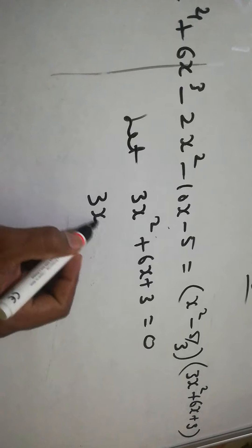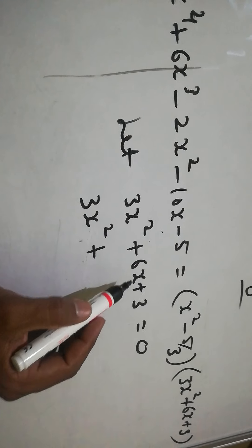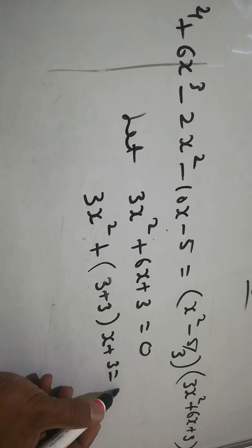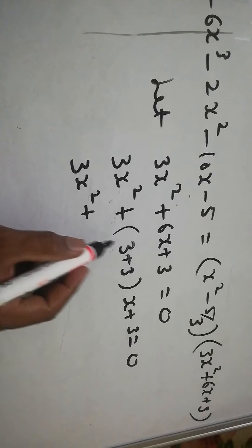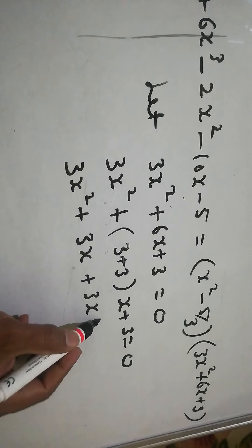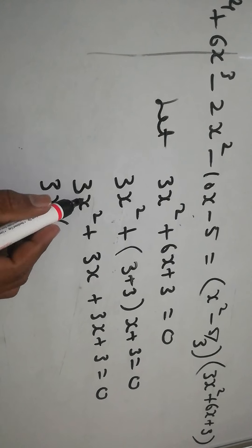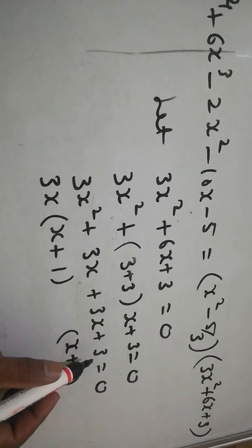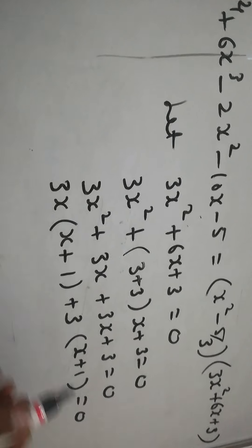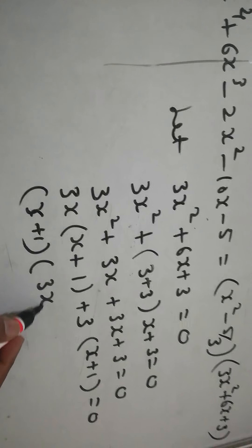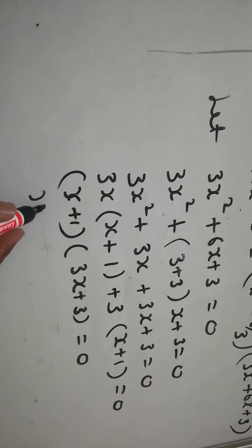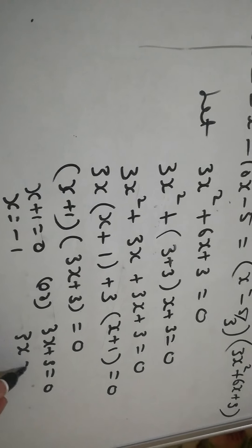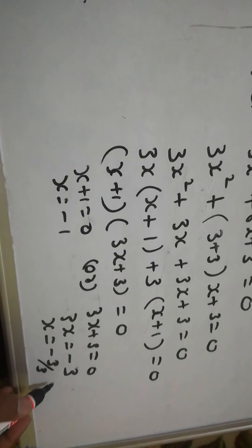Now let 3x² + 6x + 3 = 0. We split the middle term: we need two numbers that multiply to 9 and add to 6, which is 3 and 3. So 3x² + 3x + 3x + 3. Taking 3x common from the first pair gives 3x(x + 1), and 3 common from the second pair gives 3(x + 1). Therefore (x + 1) is a factor and (3x + 3) is another. So x + 1 = 0 gives x = -1, and 3x + 3 = 0 gives 3x = -3, so x = -1.